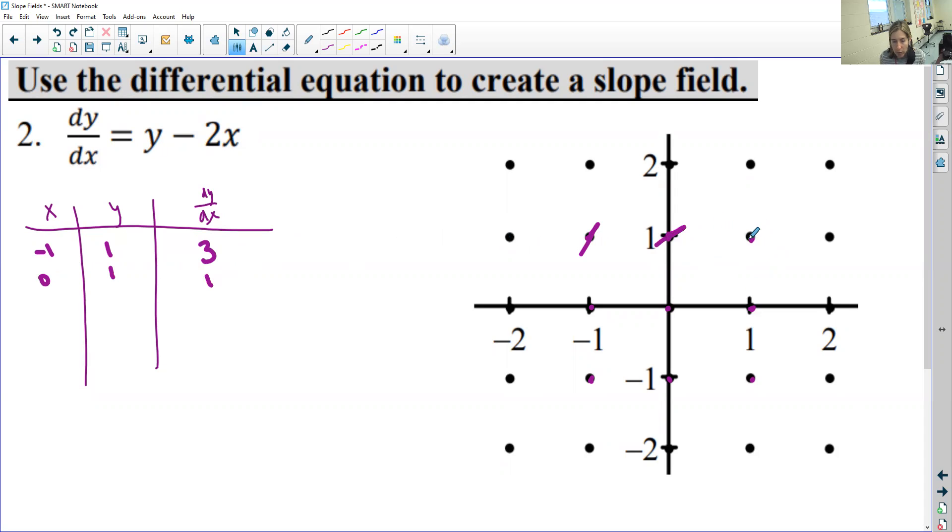And then here's the point 1, 1. So then you have 1 minus 2, which will be negative 1.